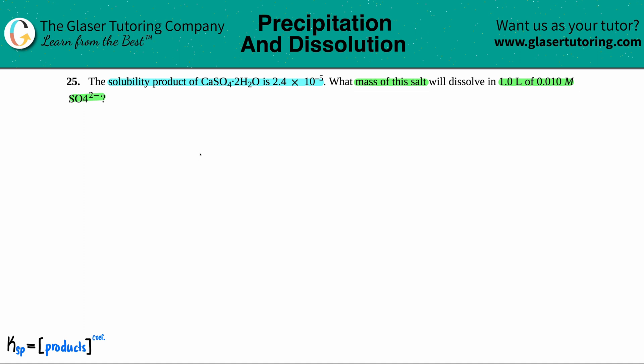Okay, so they gave us a couple of things here. They're telling us that the solubility product of calcium sulfate dihydrate, which is CaSO4·2H2O, is 2.4 times 10 to the negative 5. Remember, the solubility product is the Ksp. So they told us that the Ksp for this equation we have to use is 2.4 times 10 to the negative 5.